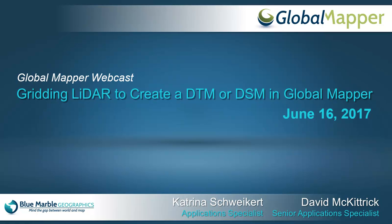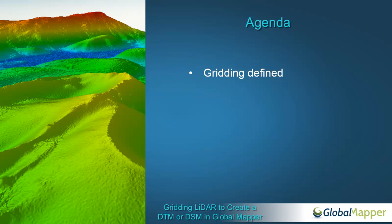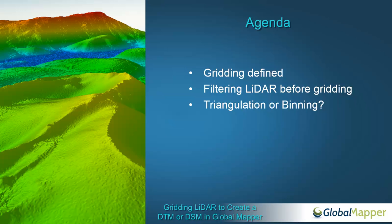As Katrina indicated, we're going to be focusing today on the process of generating a DTM, digital terrain model, and we'll also take a look at the variant, the digital surface model. First, before we get too deep into the procedure, we need to define exactly what it is we're doing — the process of gridding, which is essentially a transformation from points to a surface. We'll talk about filtering options, recapping content from a previous presentation. There are two procedures: triangulation and a binning process.